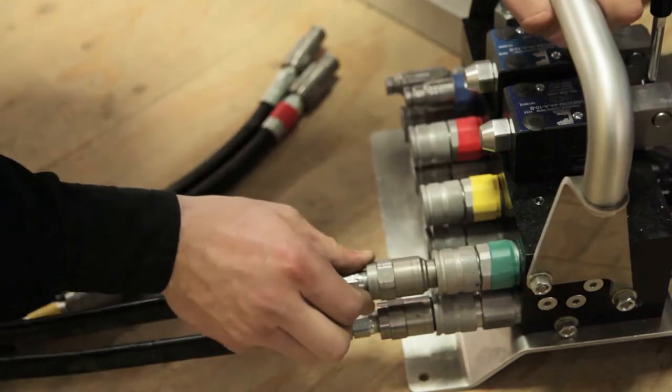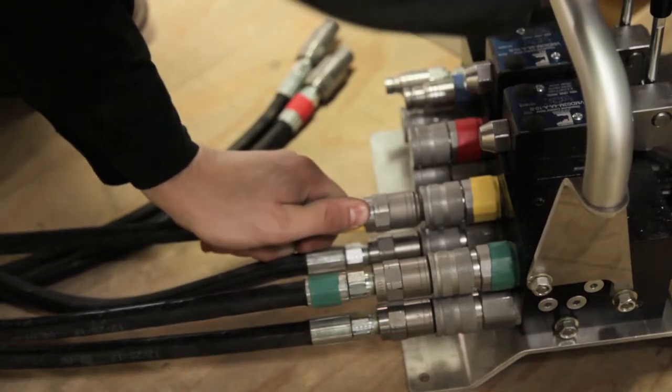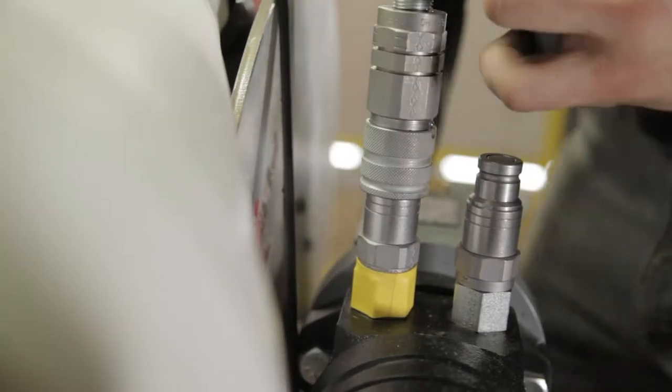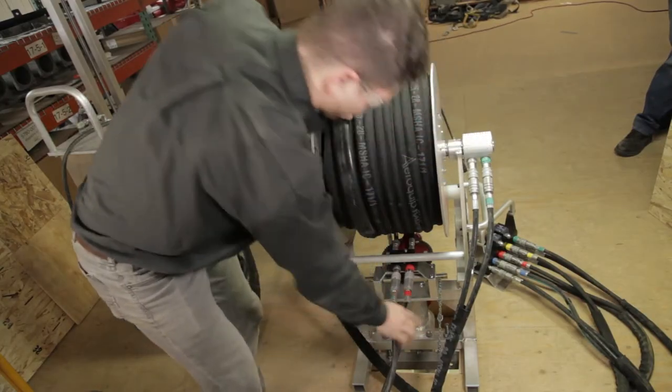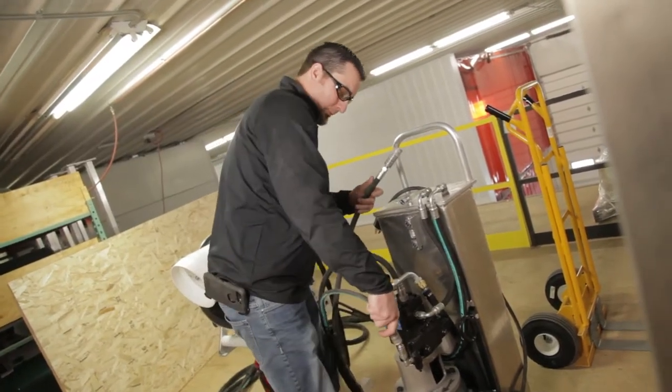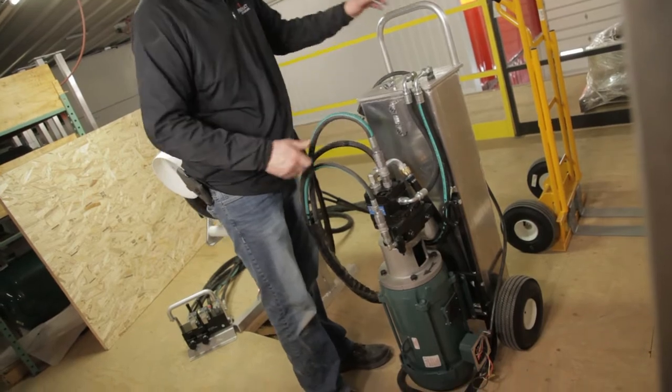The color-coded hose sets and quick disconnect fittings allow you to quickly make these connections. You can refer to the technical manual for more detailed instructions and diagrams, including how to make the final connection between the control valve block and the hydraulic power unit with the remaining three hose set.